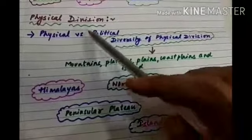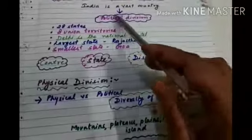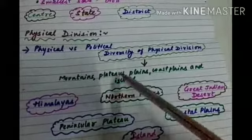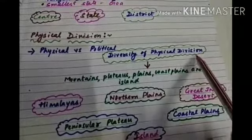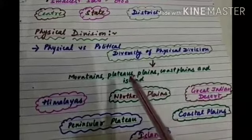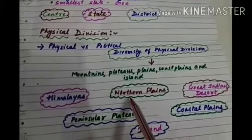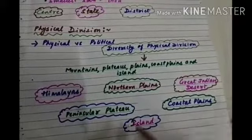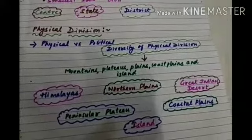Physically, if we talk about physical versus political divisions — politically we studied states and union territories, while physically we study the diversity of physical divisions. India is physically divided into mountains, plateaus, plains, coastal plains, and islands. Specifically, we have the Himalayas, the Northern Plains, the Peninsular Plateau, islands, the Great Indian Desert, and coastal plains. All these things we will study in this chapter.